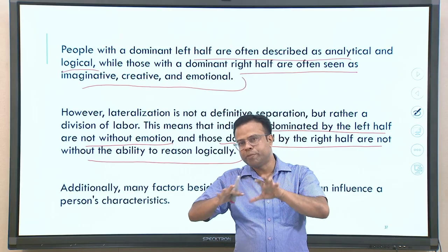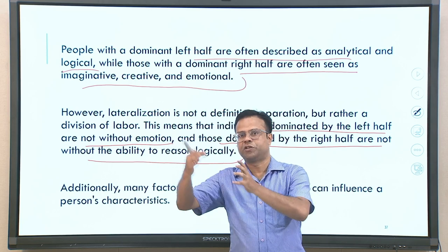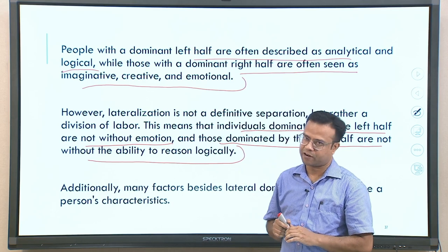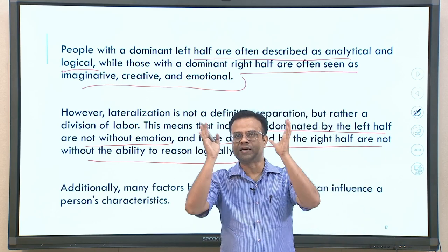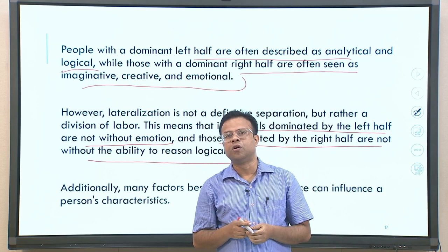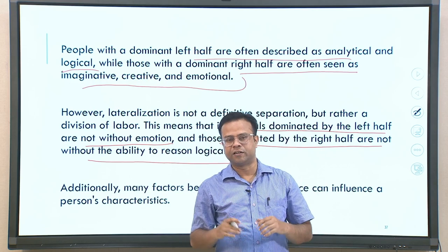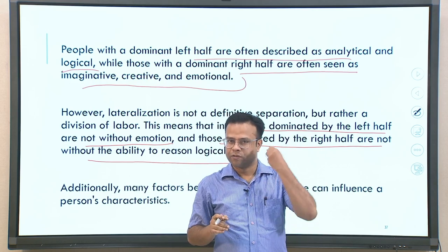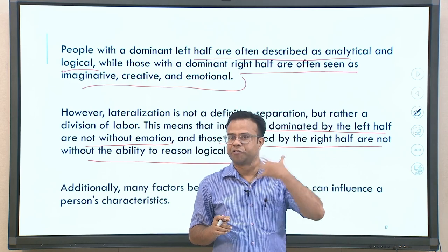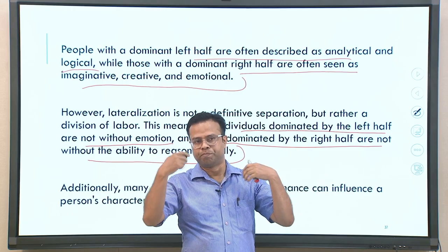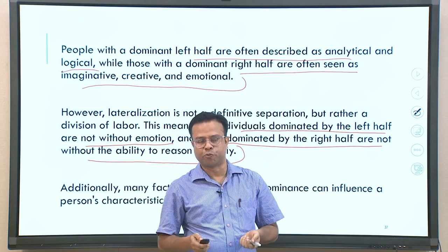It is more about dominance of function rather than exclusive functions. Additionally, many factors besides lateral dominance can influence a person's characteristics, so what mental functions one performs is not solely determined by lateralization. This is one aspect that can explain differential or dominant functions among people.